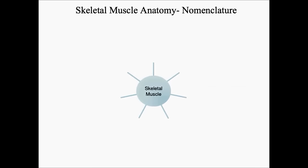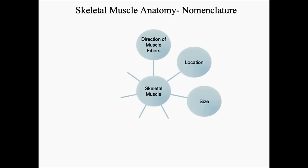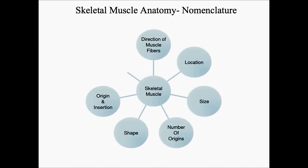Nomenclature is a naming system, and there are seven different ways to name skeletal muscle — and any combination of these can be used. The seven ways are: by the direction of muscle fibers, by location, by size, by the number of origins, by shape, by origin and insertion, and by actions.